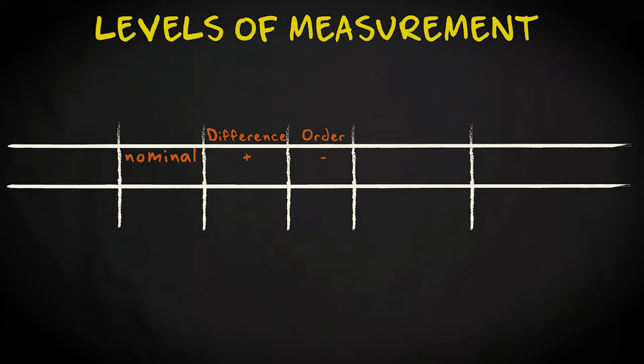The second level of measurement is the ordinal level. There is not only a difference between the categories of a variable, there is also an order. An example is the order in a football competition. You know who is the winner, you know who came second, and third, etc. However, by looking at the order, you don't know anything about the differences between the categories. You don't know, for example, how much the number one was better than the number two.